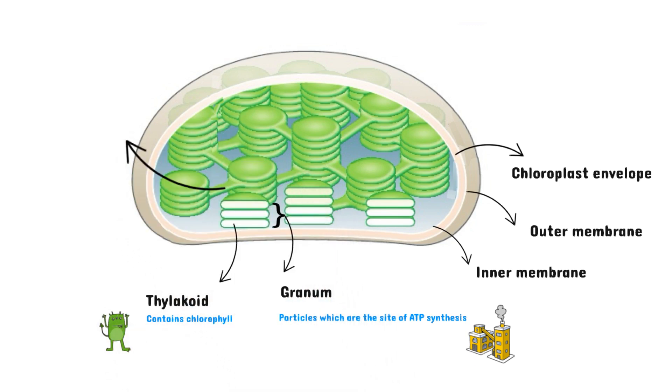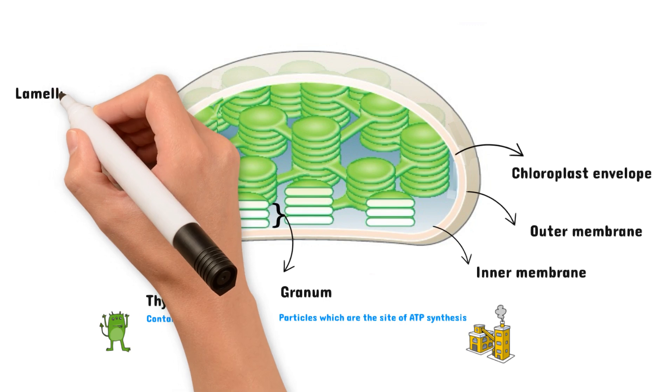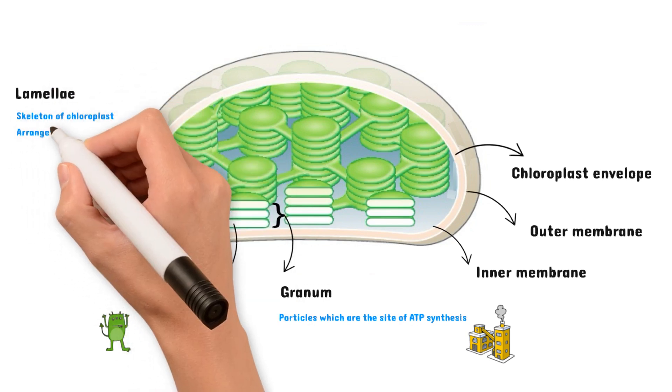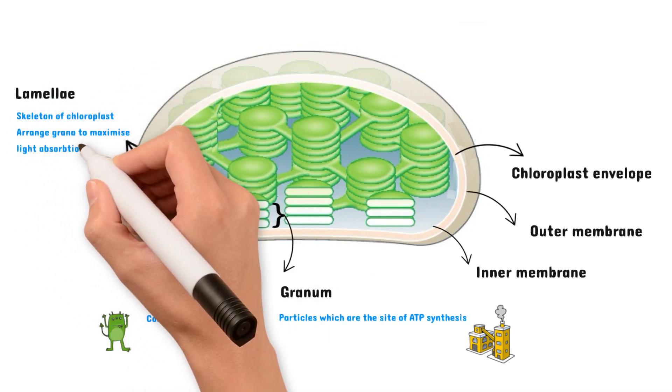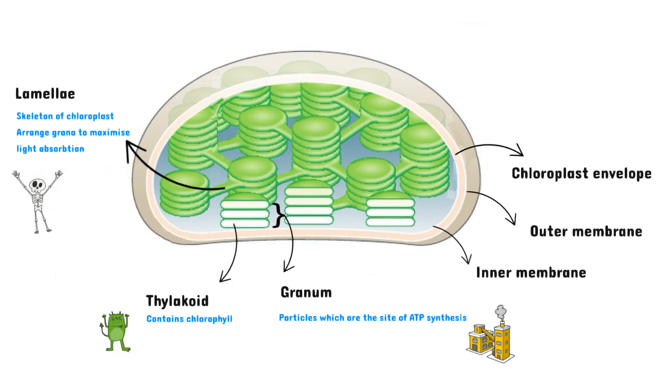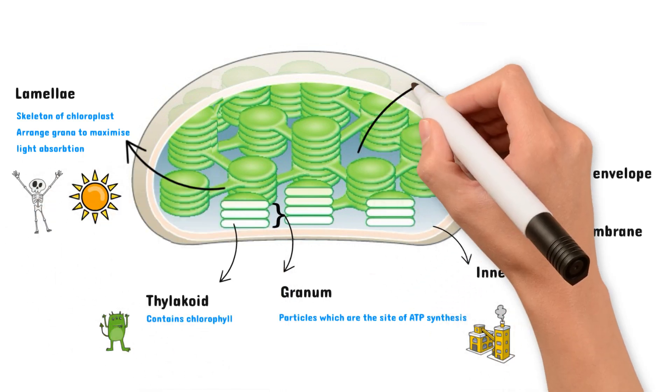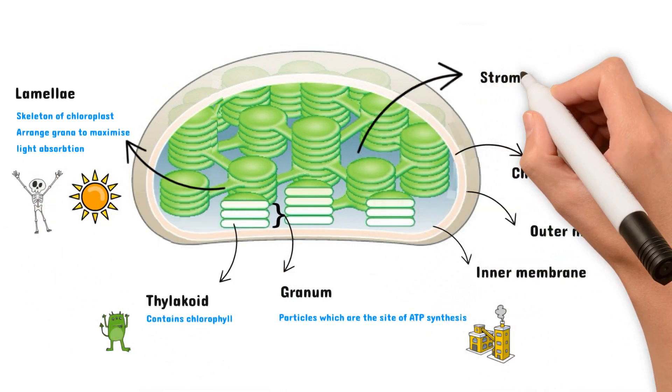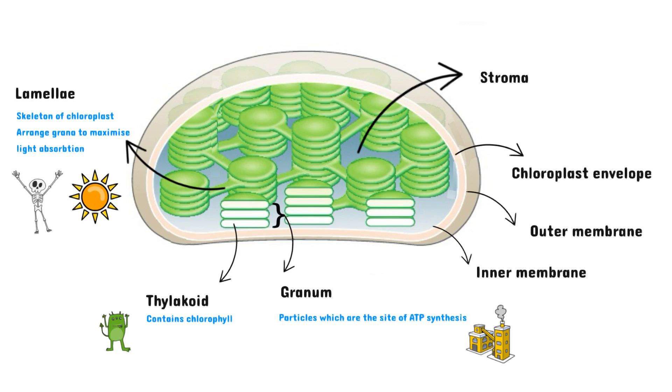Next we have these structures which connect different grana together. They are called lamellae. They act as a skeleton of the chloroplast and maintain distance between the grana so that they receive as much light as possible. Lastly, we have the stroma, which is the matrix that surrounds the grana. It contains all the enzymes needed for photosynthesis and the production of glucose.